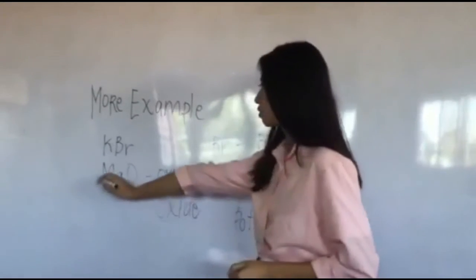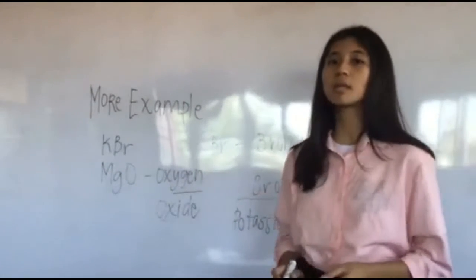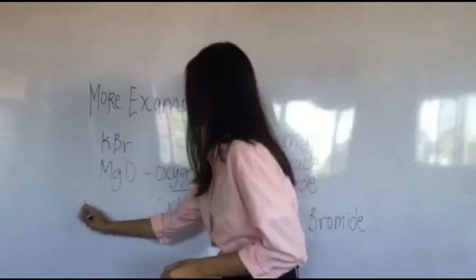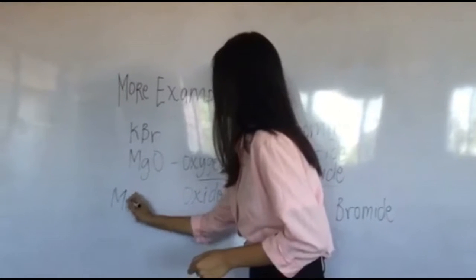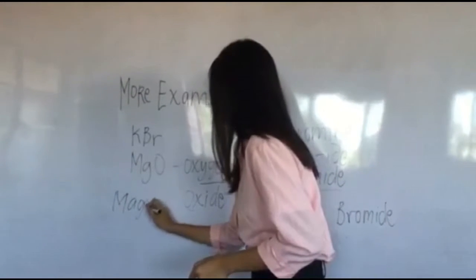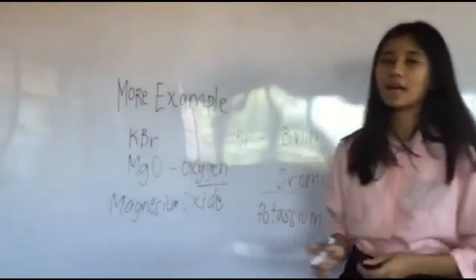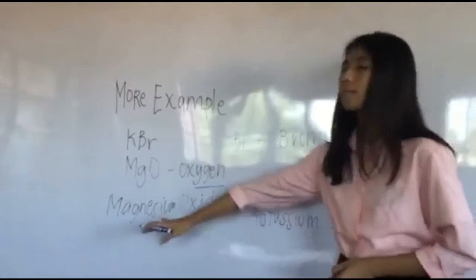And we are just going to get the first element, which is Mg, and it means magnesium. So our final name is magnesium oxide.